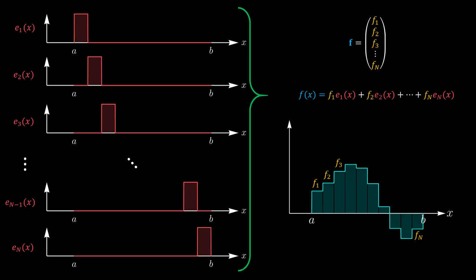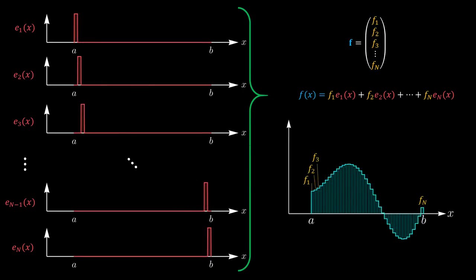The approximation gets better as we increase the density of samples, because the basis functions become narrower. The number of basis functions therefore increases, as they need to cover the whole interval between a and b. The dimension of the vector, which is equal to the number of basis functions used to span the space, therefore increases.